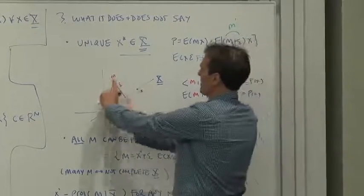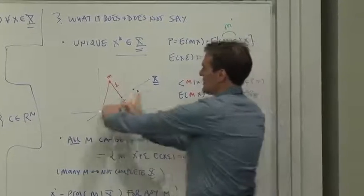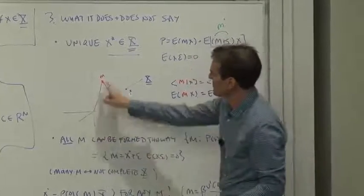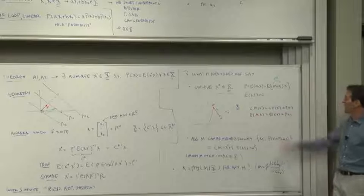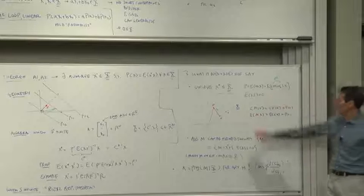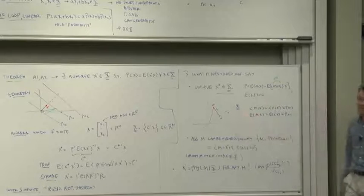the inner product of M with X, is the same as the inner product of X star with X because the difference, Epsilon, is off at right angles. That expresses the same thing in graphs as that expresses in algebra.